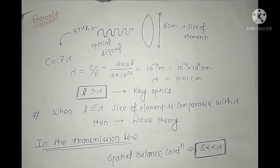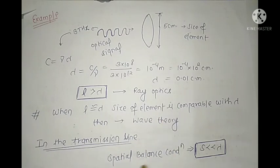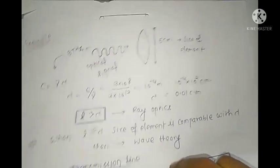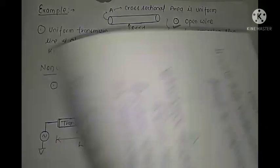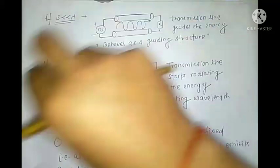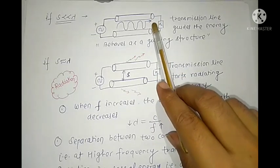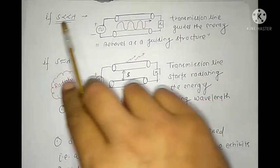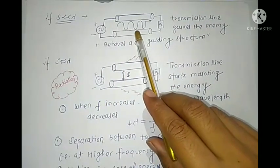There is a third condition: when the size of the element is comparable with lambda, then you use wave theory. For our transmission line — a guiding structure — this condition must be satisfied. You can see this is the two-conductor system guiding energy along its length. The condition is that the separation S between the two conductors must be very much less than lambda. When this condition is satisfied, your transmission line behaves as a guiding structure.